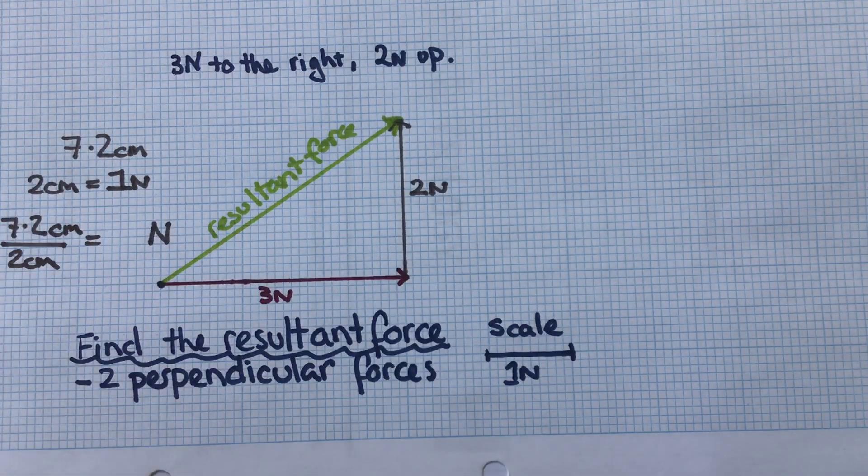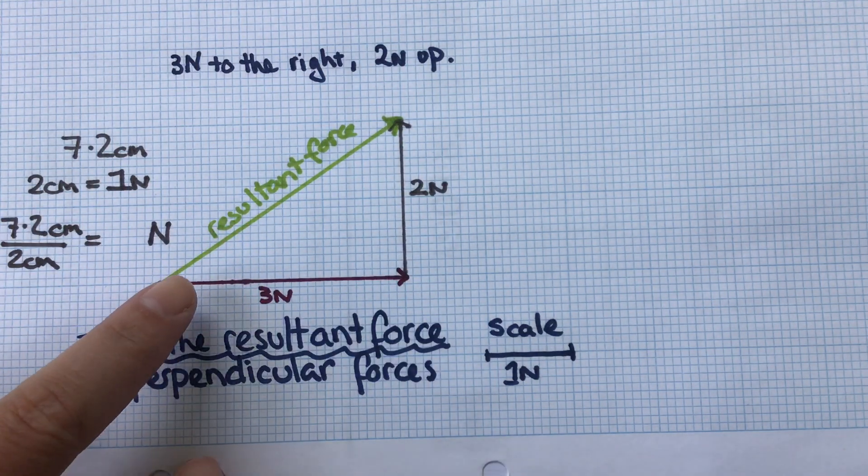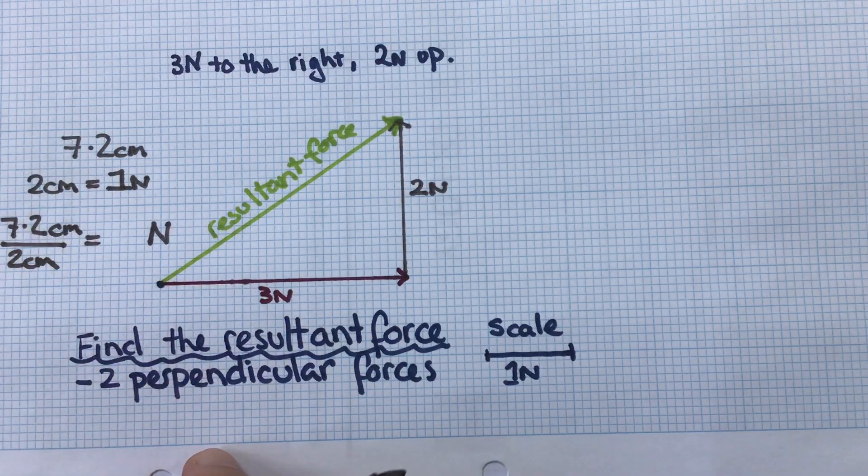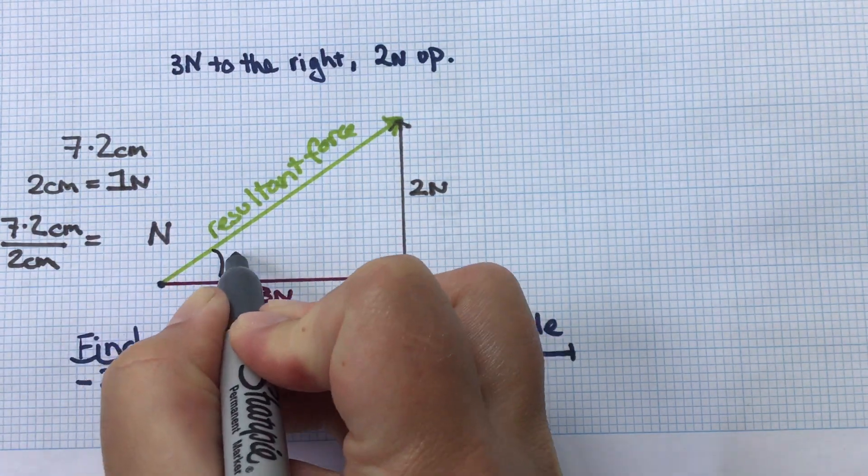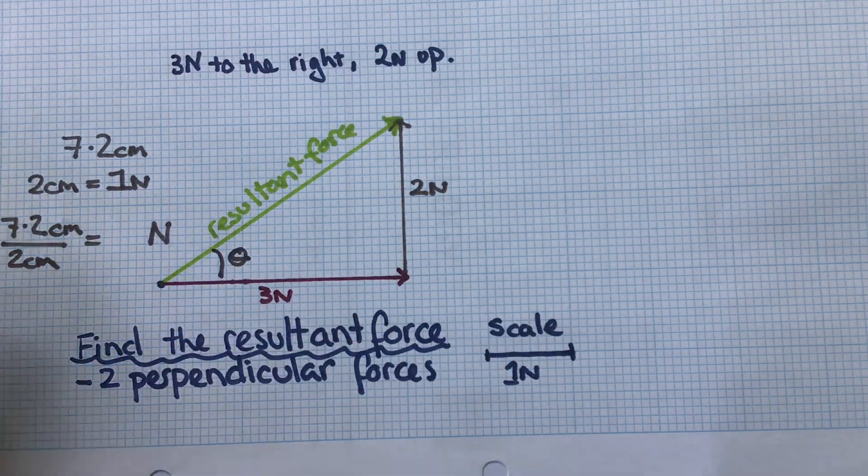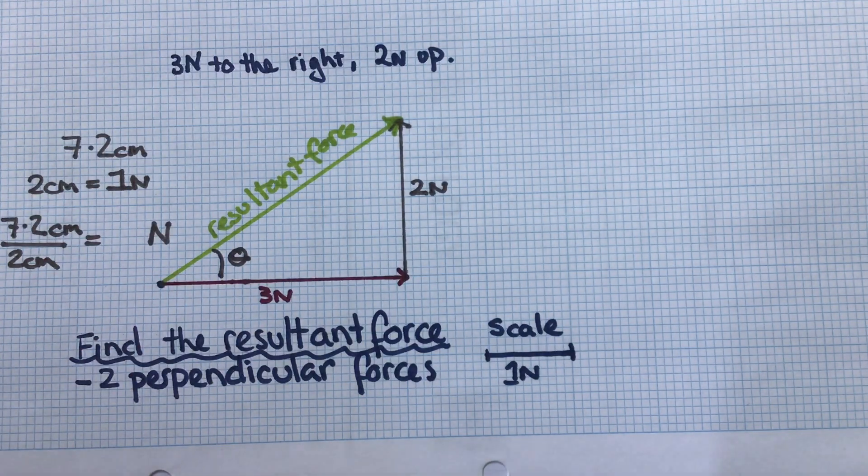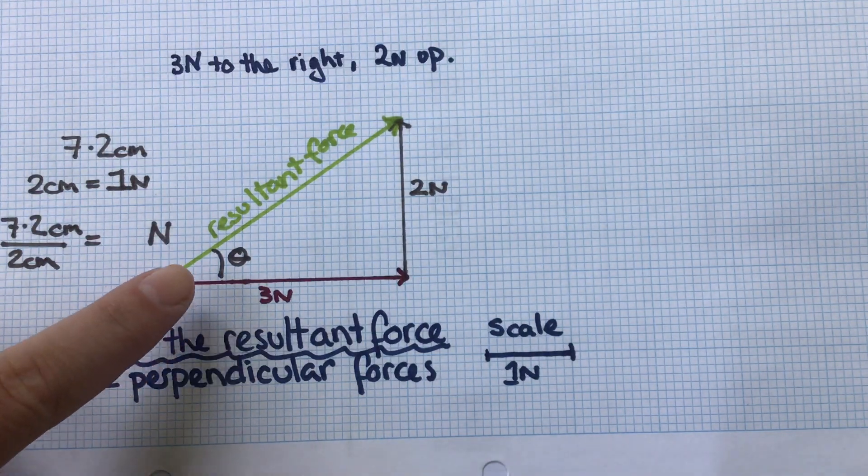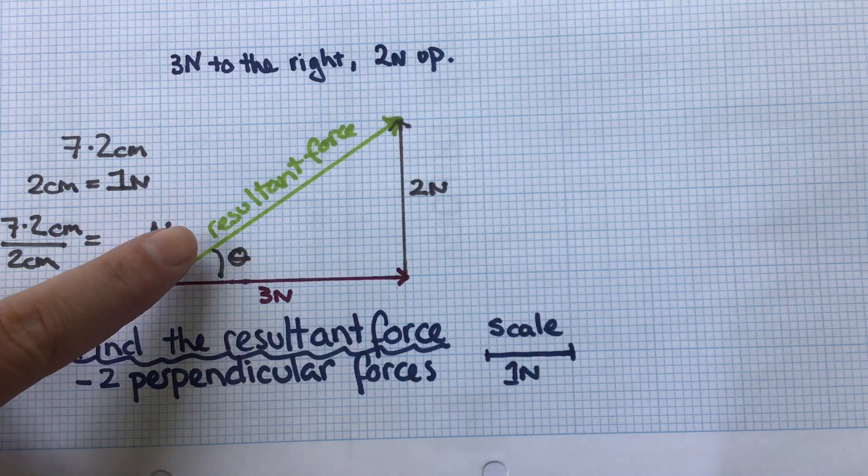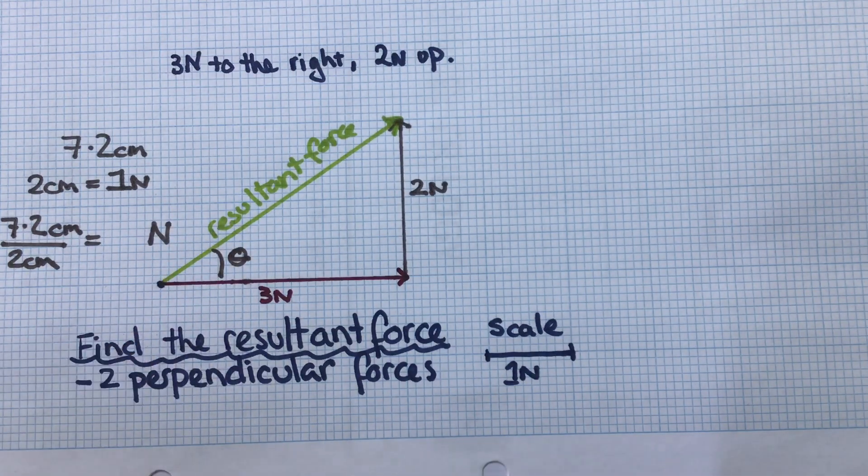We'll calculate that in just a second, and then we need to get a protractor and measure this angle here to say the direction. This is a vector, so it's got magnitude and direction. We need to measure the size of this angle so we can show the direction it is acting in.